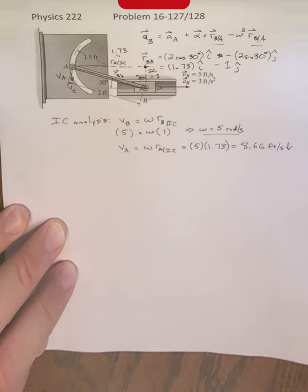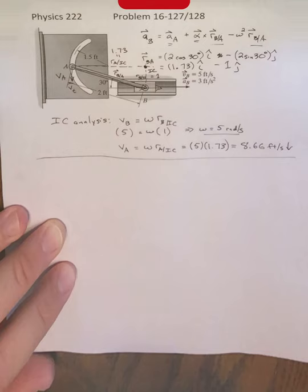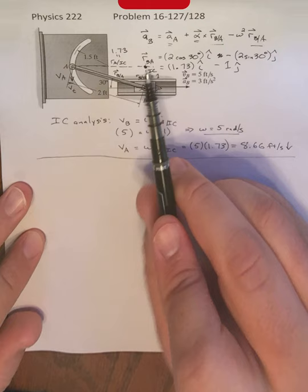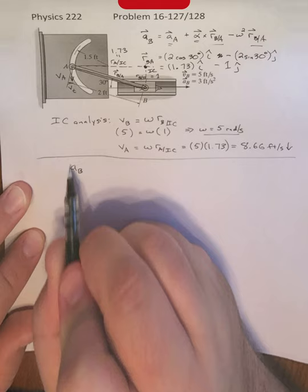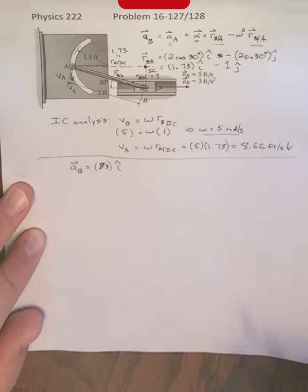Now, once we have that, that gives us our value of omega. We then have remaining as unknowns our angular acceleration alpha and our acceleration A. So writing down what some of these vectors are, we've already written down what our relative position vector is. We know that our aB is just going to be equal to 3 feet per second squared multiplied by i hat. That's this term right there.